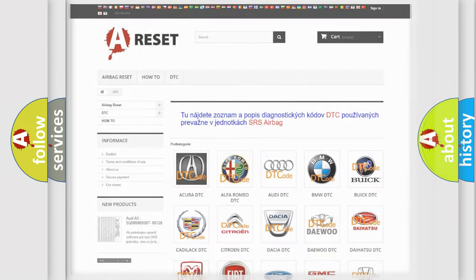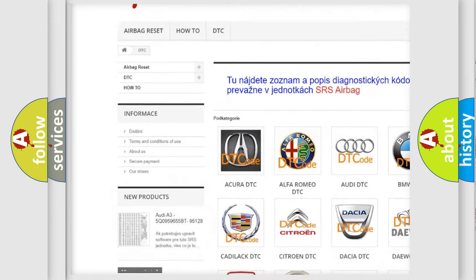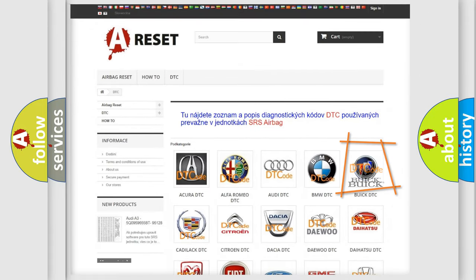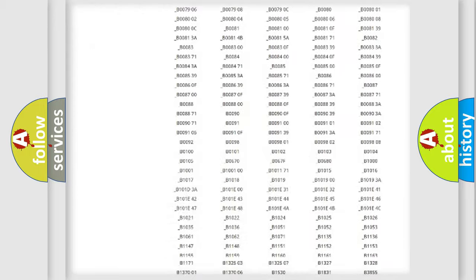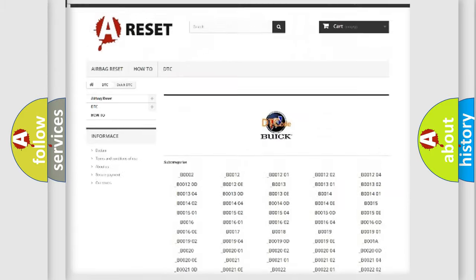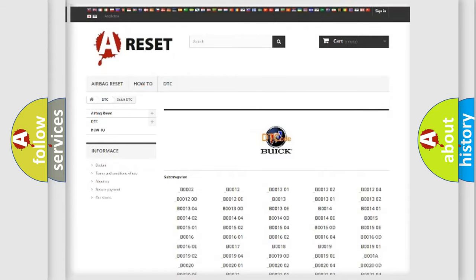Our website airbagreset.sk produces useful videos for you. You do not have to go through the OBD2 protocol anymore to know how to troubleshoot any car breakdown. You will find all the diagnostic codes that can be diagnosed in Buick vehicles, and also many other useful things.